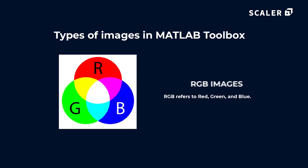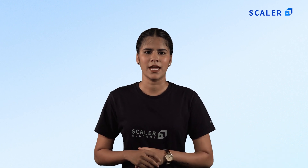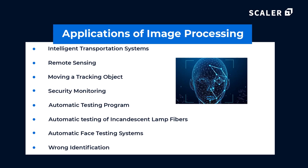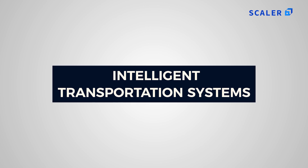Indexed images represent the mood, content, and theme of an image using a matrix of whole numbers, where each number refers to a specific color in a color map. In an RGB image, each pixel is represented as three values corresponding to its red, green, and blue components. An RGB image has 3D dimensions of size M × N × 3, where M and N are the height and width of the image, and 3 represents the color channels.